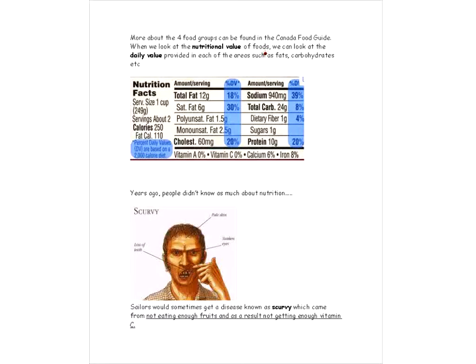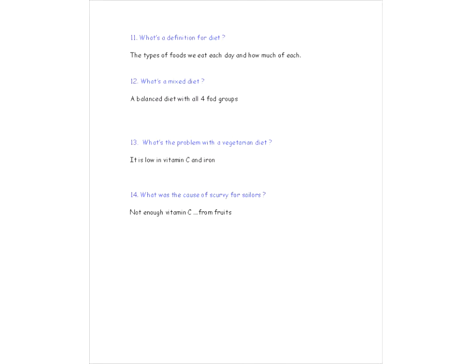Alright, now more about the four food groups can be found in the Canada Food Guide. You've looked at the nutritional value of foods, we're talking about the daily value provided in each of the areas that are important such as fats, carbohydrates, that sort of thing. So you've probably seen this sort of thing before. If you look in the cereal box, you'll see this sort of thing and it tells that a certain serving of cereal, for instance one cup, provides this much of our daily value of fats, cholesterol, carbohydrates, dietary fiber, that sort of thing. Now years ago people didn't know a whole lot about nutrition. So sometimes people got the disease known as scurvy. You can see this guy right here. He's got sunken eyes, loss of teeth, pale skin. Sailors would sometimes get scurvy because they didn't eat enough fruits. And of course fruits provide vitamin C and so a lack of vitamin C was actually the cause of scurvy. Nowadays we don't see too much scurvy, at least in North America.